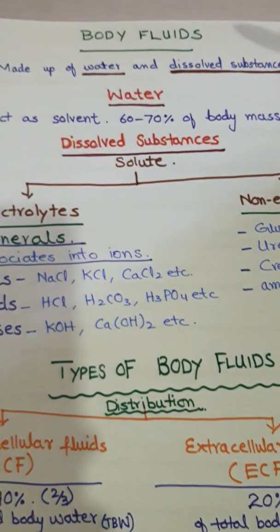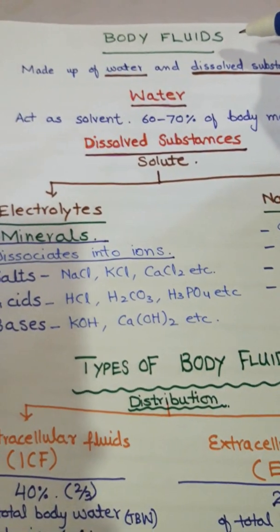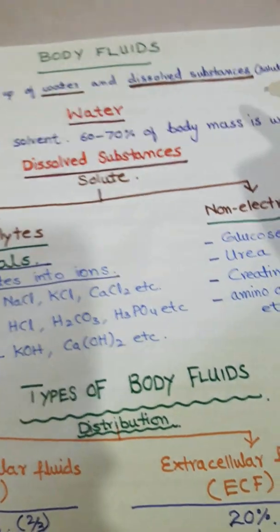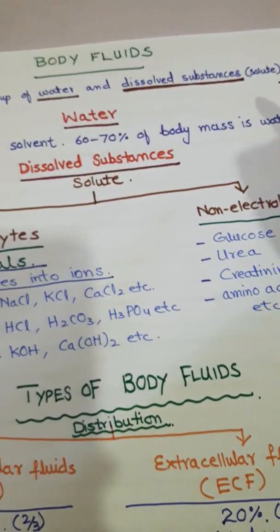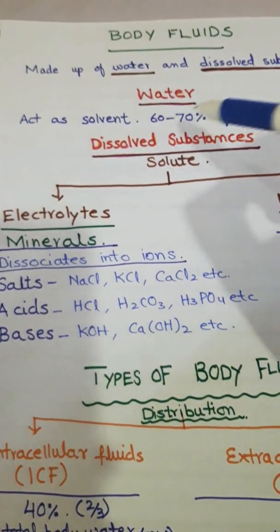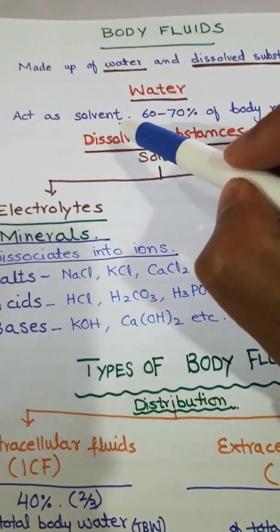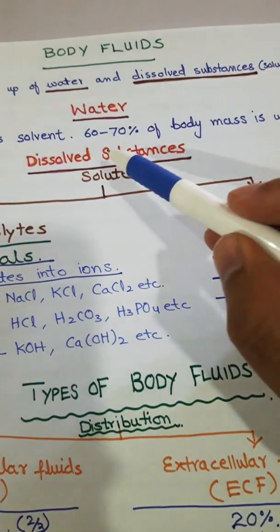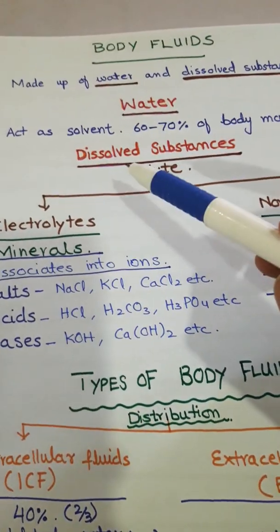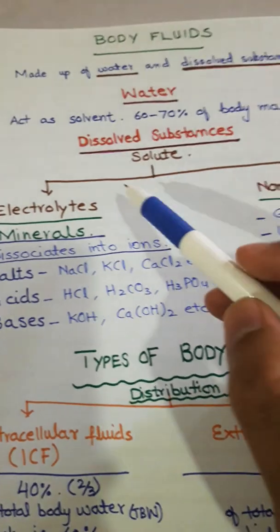Today we will discuss what are body fluids and their types. Body fluids are made up of water and dissolved substances which act as solute. Water is the major constituent of body fluids and acts as solvent. 60 to 70 percent of the body weight is water, and the dissolved substances are the solutes.